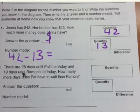For the second one, there's 28 days until Pat's birthday and 19 days until Ramon's birthday. How many more days does Pat have to wait than Ramon? Okay, so the larger quantity, 28, would go in the larger quantity box. And the smaller quantity, 29, would go into the smaller quantity box.